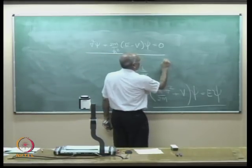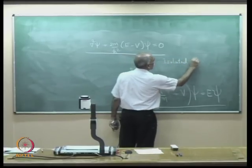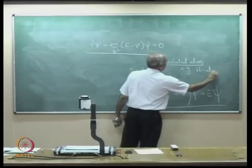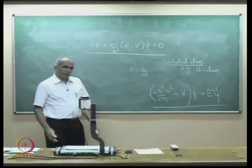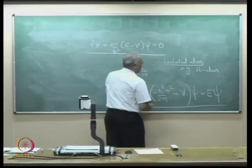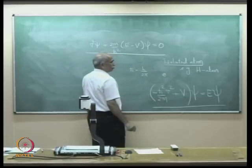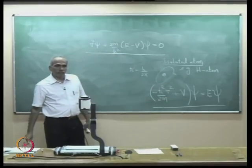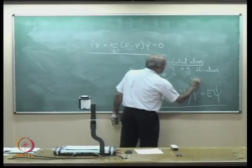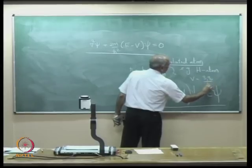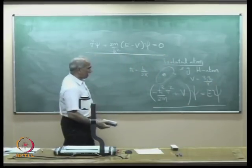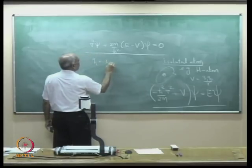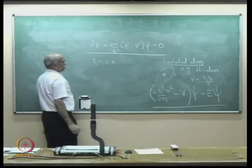If you take an isolated atom — for example, the hydrogen atom, which I am quickly recalling — it has a central positively charged proton and electrons surrounding it as a cloud. The potential energy V is given by q₁q₂/r, which for hydrogen is −e²/r, where e is the quantum of electric charge.